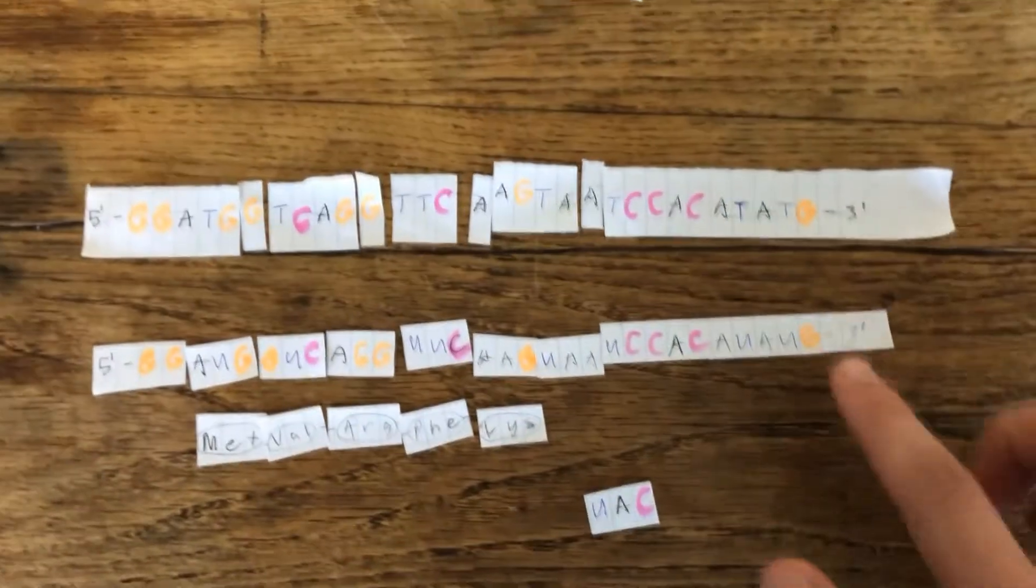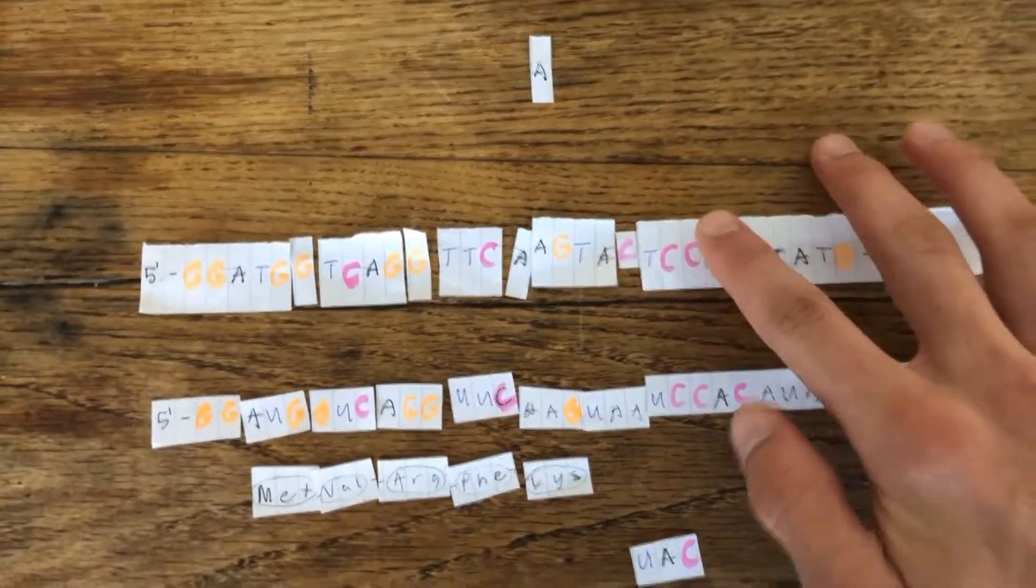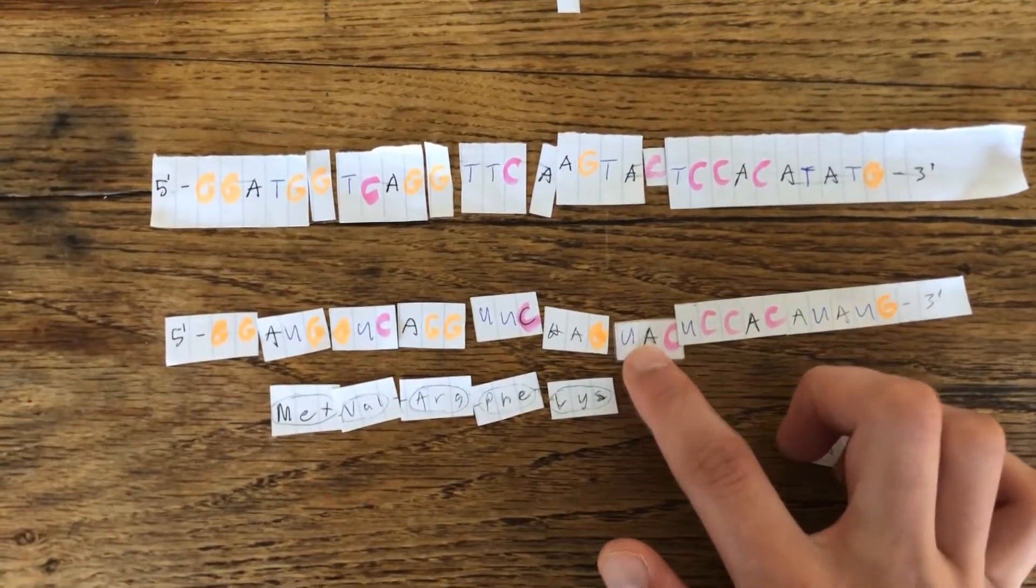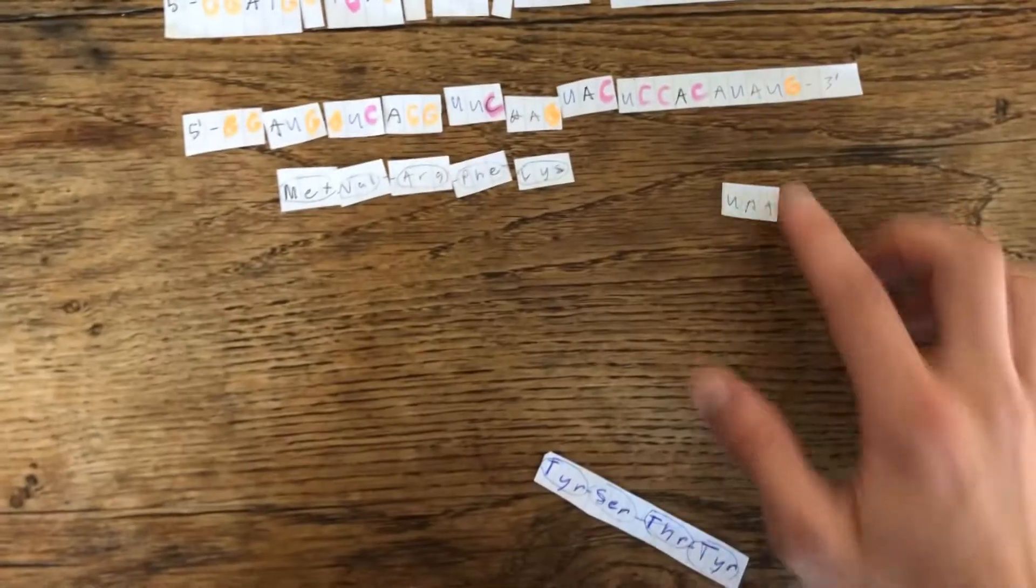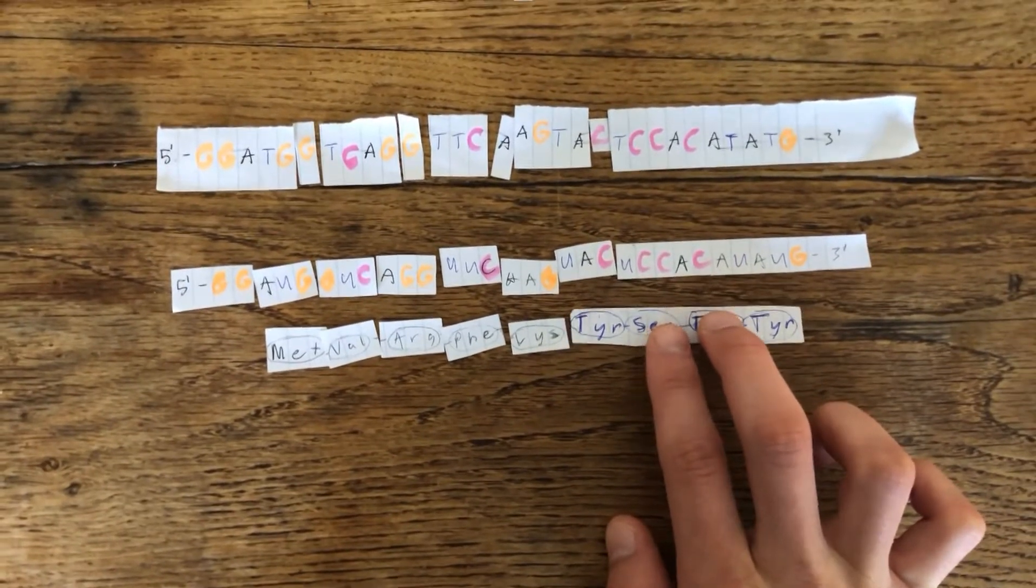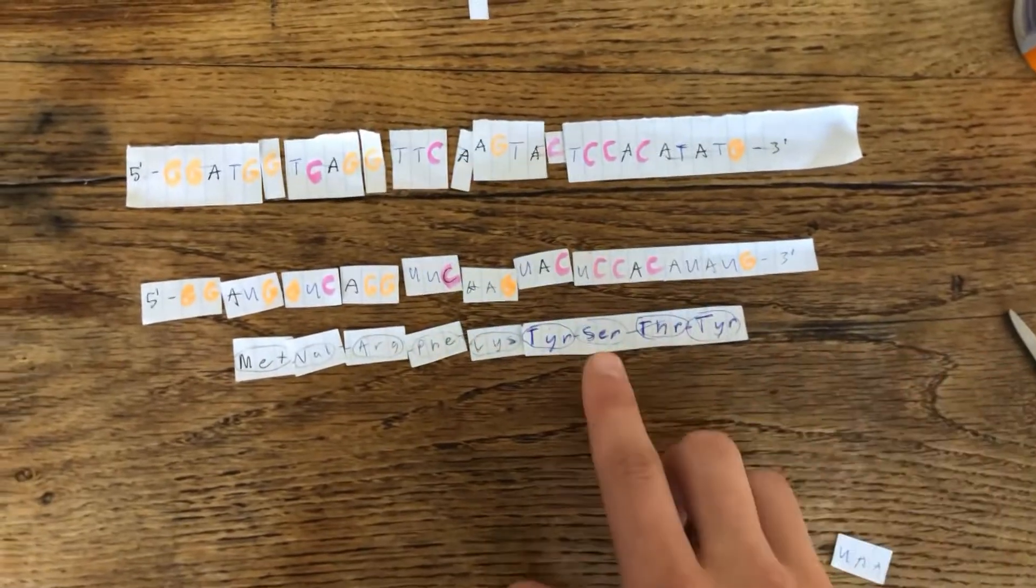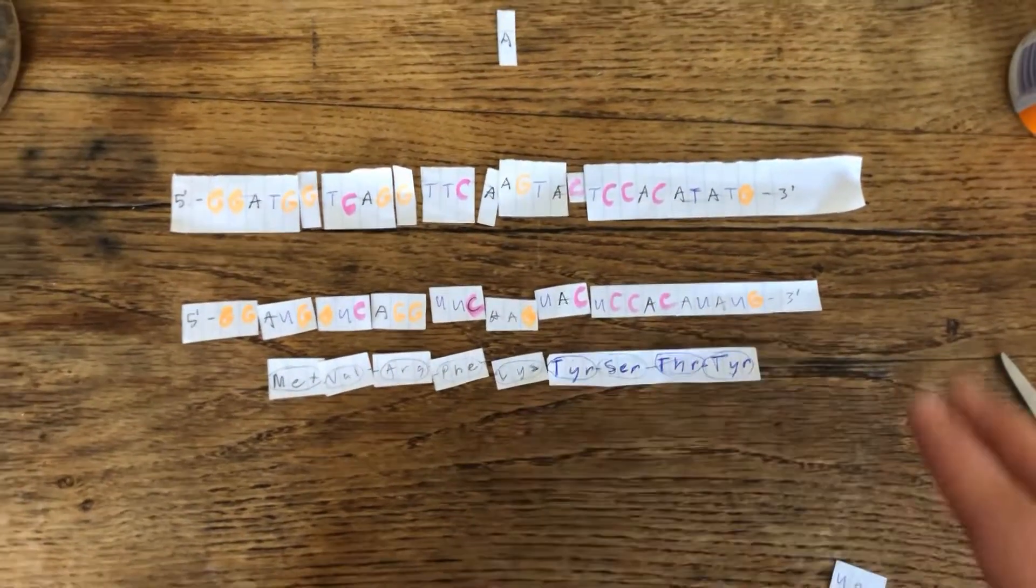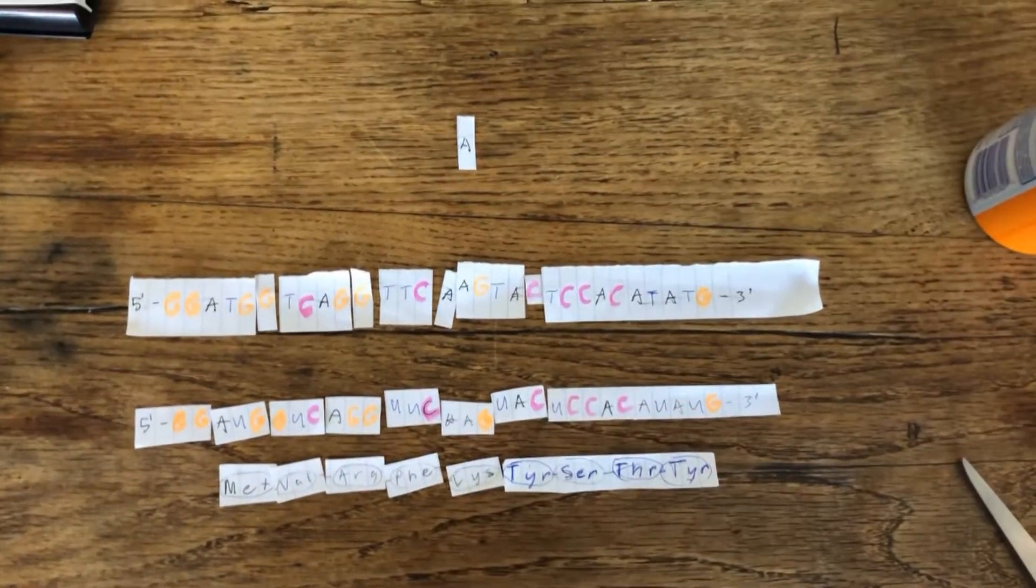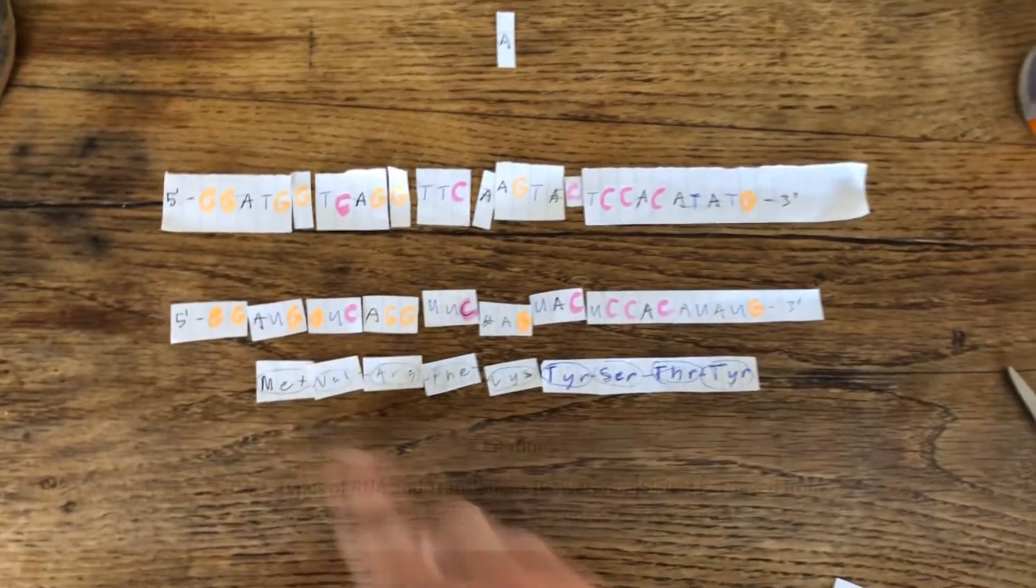For our fourth and final mutation, let's say we were to have a C replace this A right here. That would result in this stop codon being changed into UAC, which does not code for a stop codon. And so, because there's no stop codon, we're going to have translation just keep going without any stop. It's just going to keep going on and on and on, because it does not have a stop codon. This is called a read-through, and the replacement of the A with a C is going to be a transversion as well. This is going to result in a possibly non-functional protein, or a protein with a completely different function.